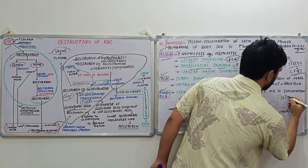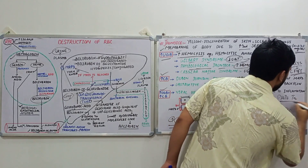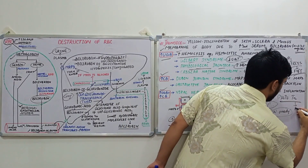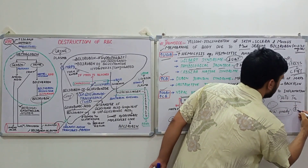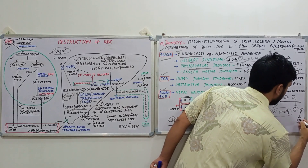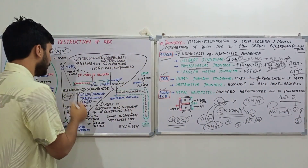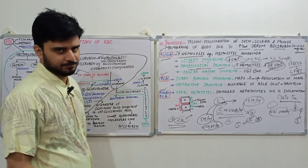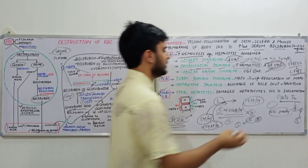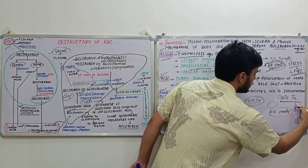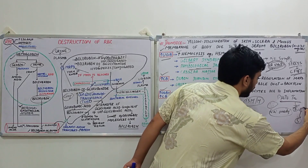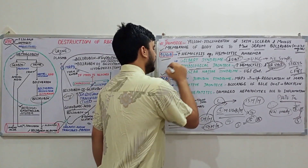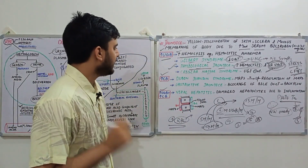In certain extreme cases of physiological jaundice, phototherapy may be required. What phototherapy does is change the shape of the bilirubin molecule, converting it from the insoluble to the soluble form. Because it is now soluble, it can pass directly from the blood into the urine and be excreted, without needing conjugation by the liver.